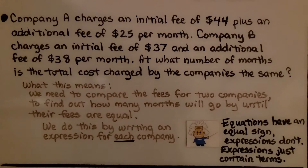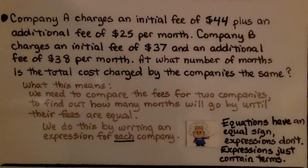Here's our first problem. Company A charges an initial fee of $44 plus an additional fee of $25 per month. Company B charges an initial fee of $37 and an additional fee of $38 per month. At what number of months is the total cost charged by the companies the same? We need to compare the fees for the two companies to find how many months will go by until their fees are equal.